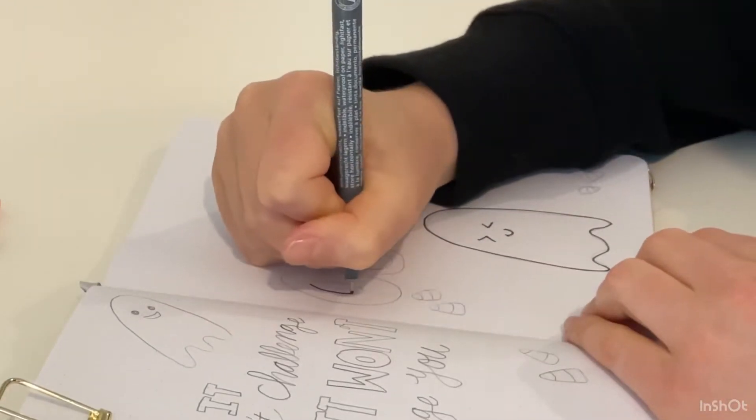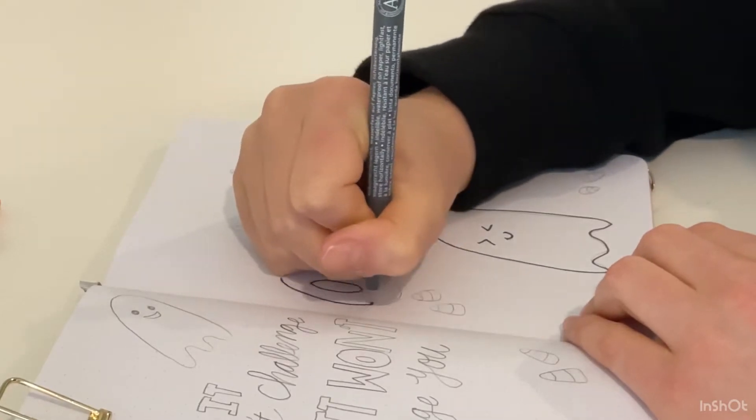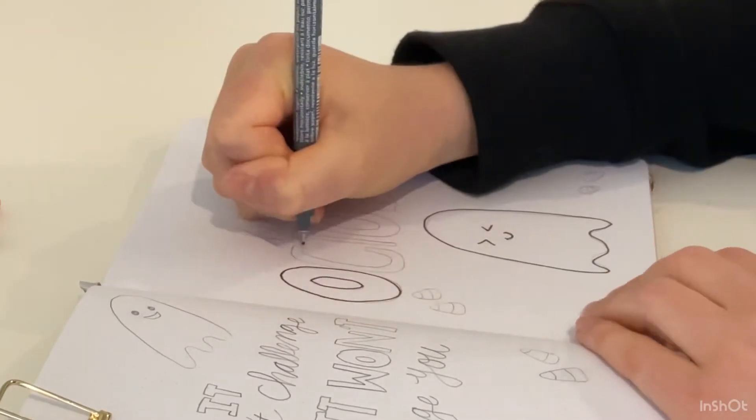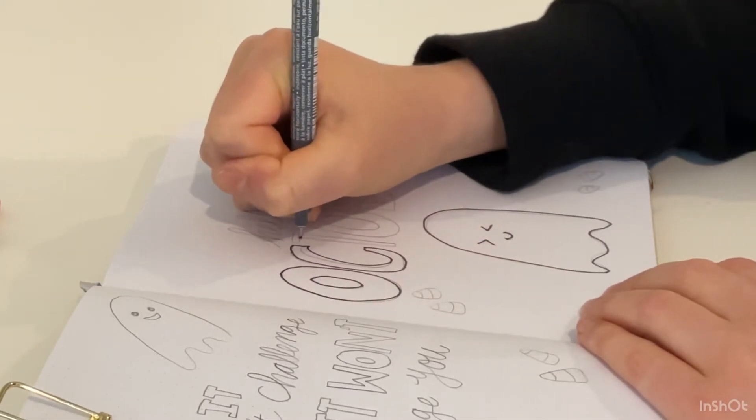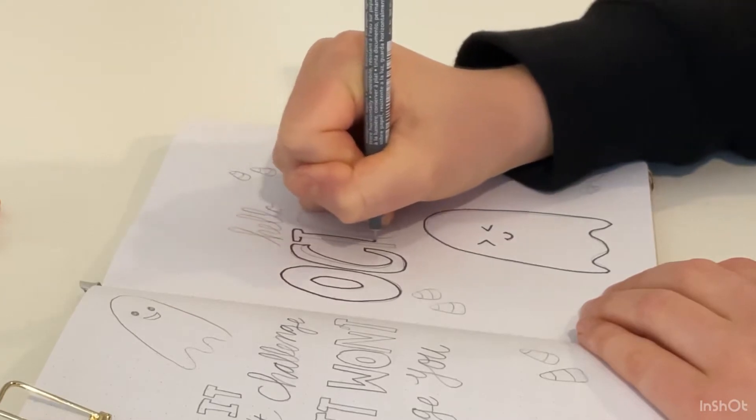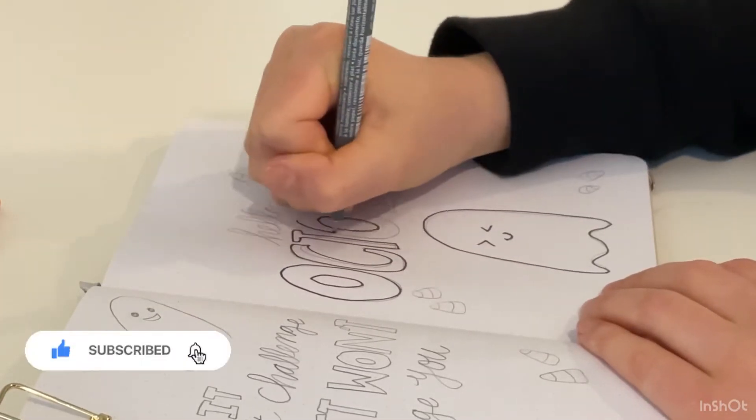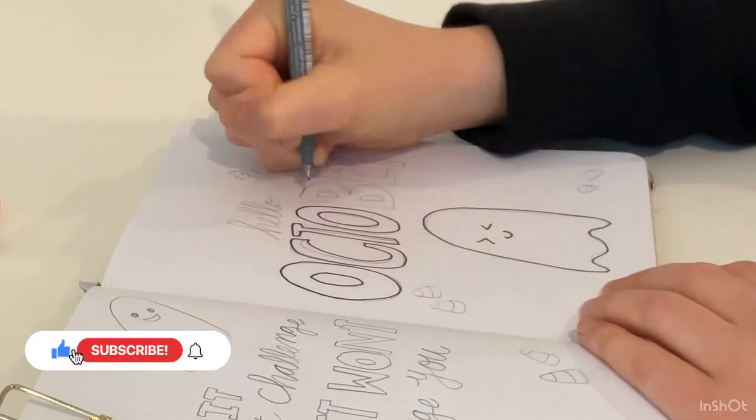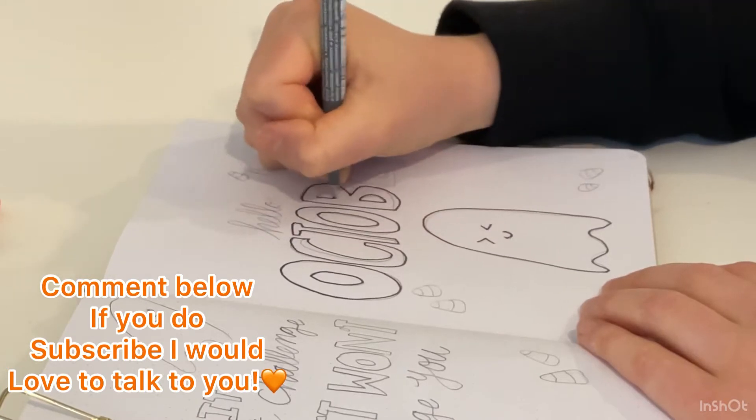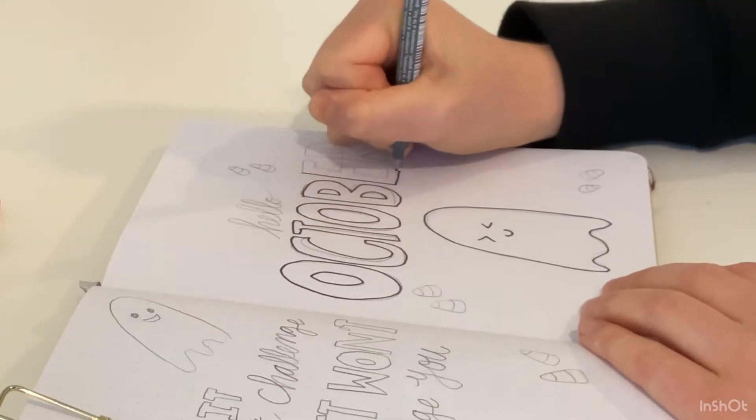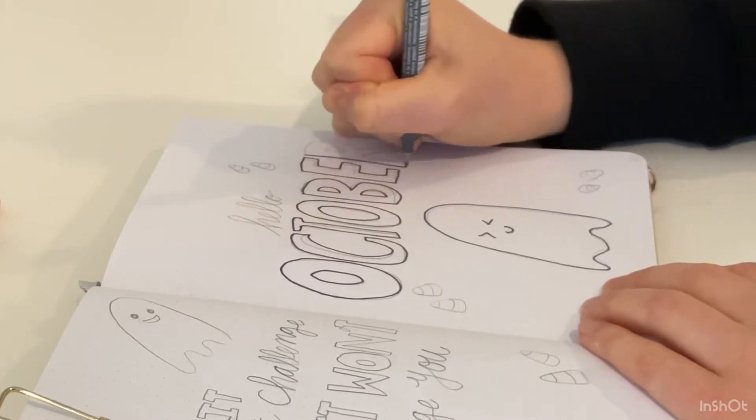Now I'm going to write out October on the cover page in all block letters. That is going to be my main font for this month and I personally really enjoy doing block letters. If you're liking this video so far, if you like bullet journaling content, watercoloring, scrapbooking, you name it, go ahead and hit that subscribe button and notification bell so you don't miss any upcoming videos.